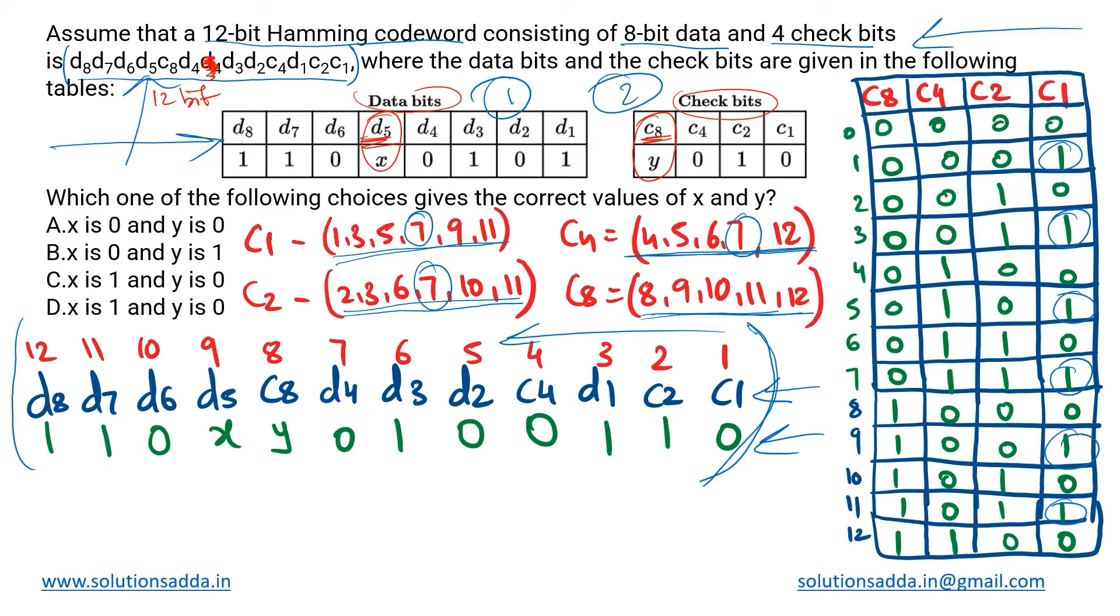So we write down their corresponding bits and we number them from right to left from 1 to 12. Now we have to find out the values of x and y. Where is our x? It is at position 9, so we will see which check bit takes care of the 9th position.